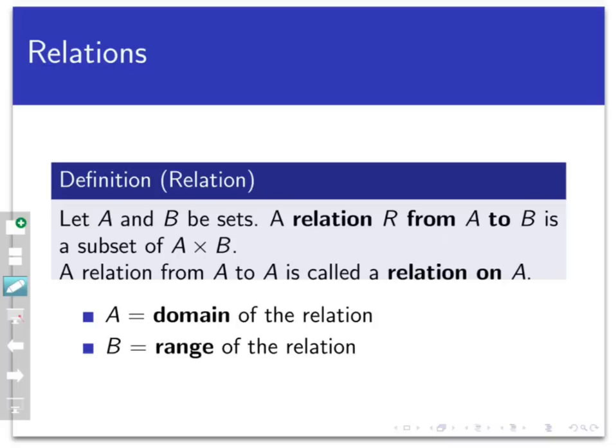A couple of pieces of terminology before we look at more examples. If R is a relation from A to B, then we say that A is the domain of the relation and B is the range. There is no concept of a codomain for a relation. We only speak of domain and range.